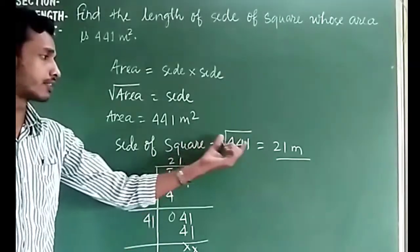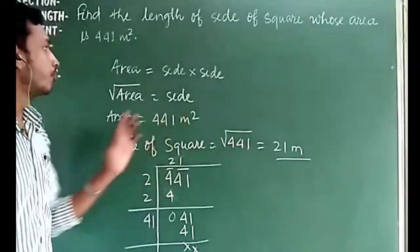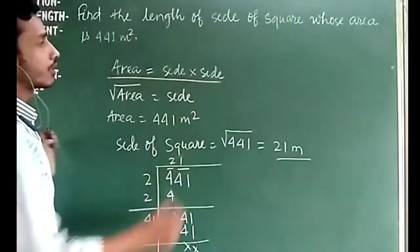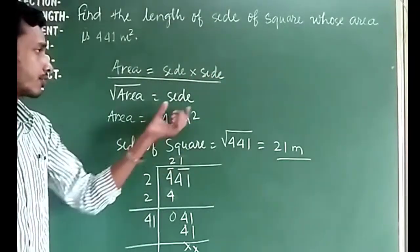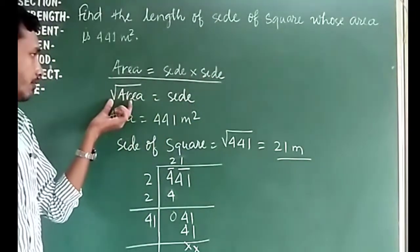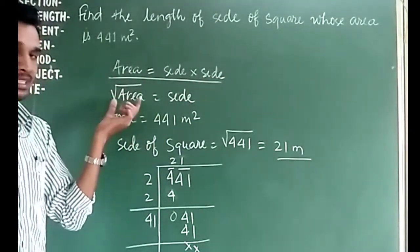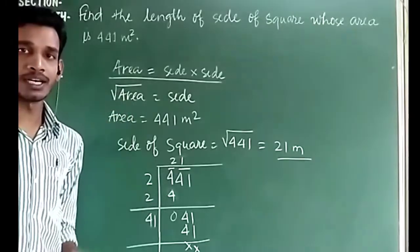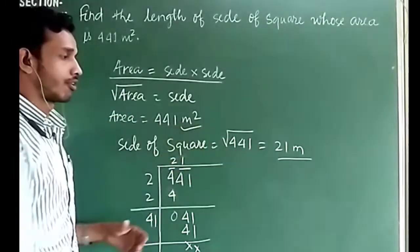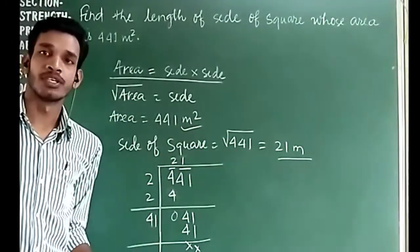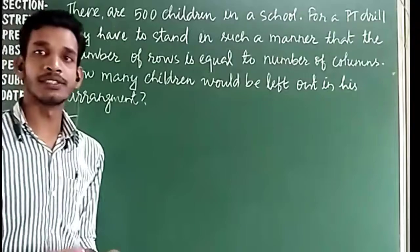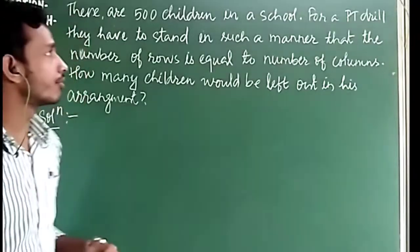I hope the question is clear. We found the square root because the area equals side × side, so we need to find the side by taking the square root of the area. Let's see one more question.